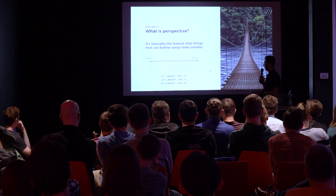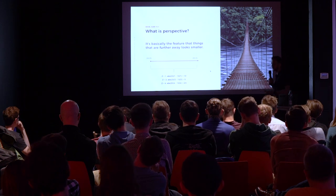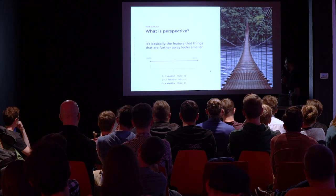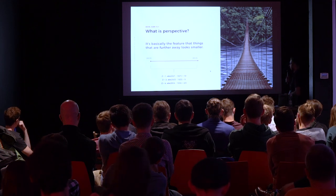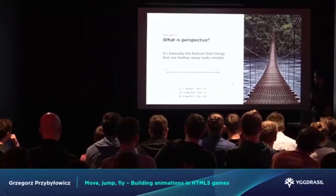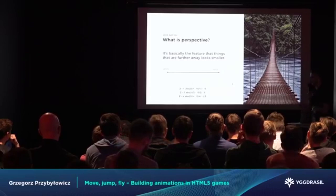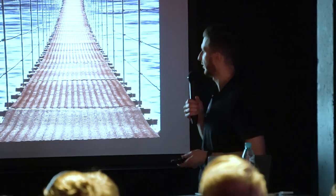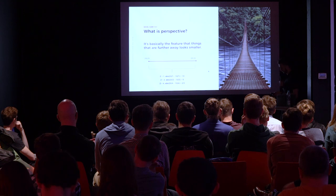Here we have a line and we want to calculate its length. For Z equals 1 — no projection — the equation is the absolute value of (20/1) minus (10/1) equals 10. If we increase Z — meaning greater distance from the camera — we divide 20 and 10 by 2: the absolute value of (20/2) minus (10/2) gives us 5. So it works. The same applies for Z equals 4 and so on.